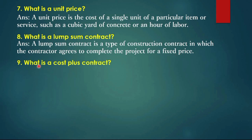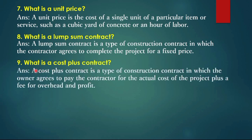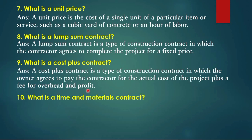Question 9: What is a cost plus contract? A cost plus contract is a type of construction contract in which the owner agrees to pay the contractor for the actual cost of the project plus a fee for overhead and profit.